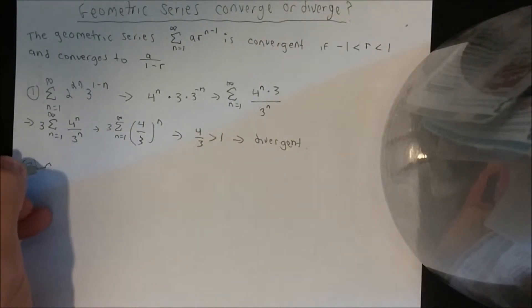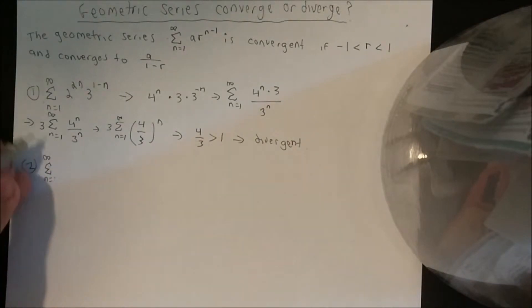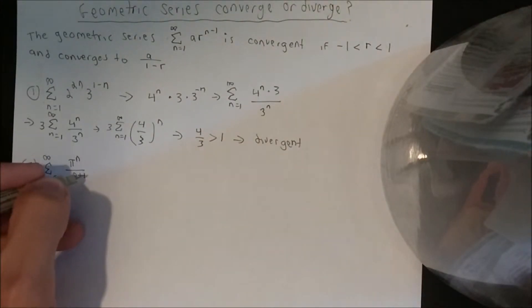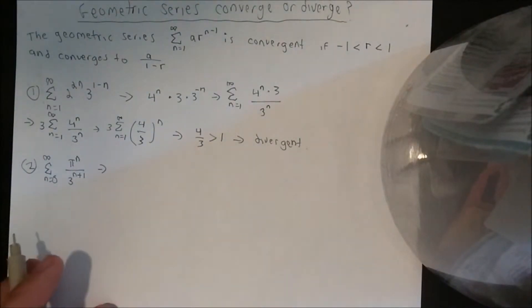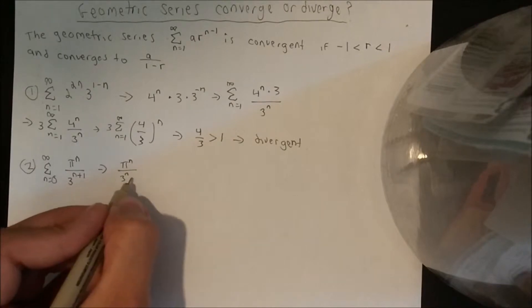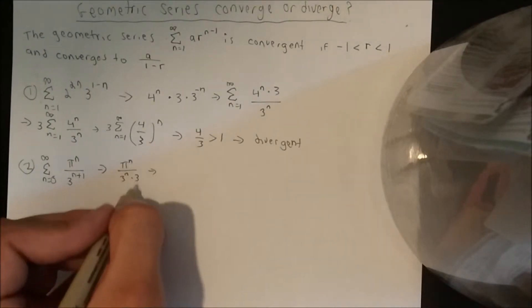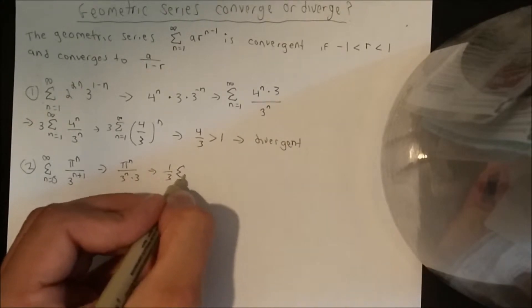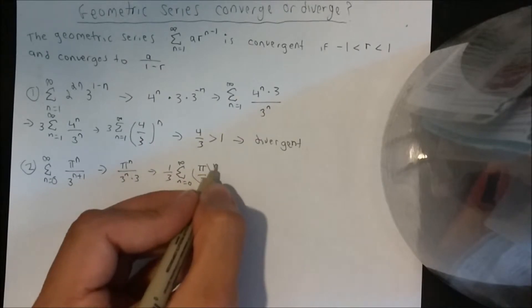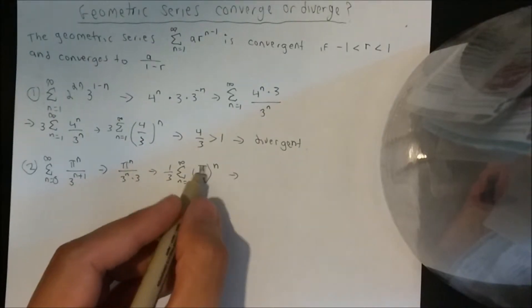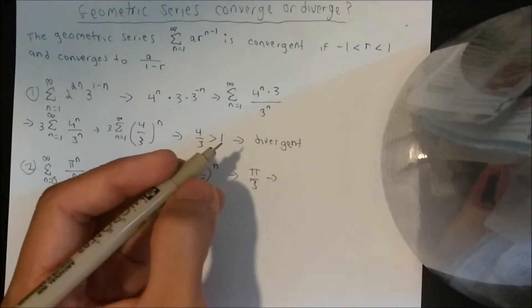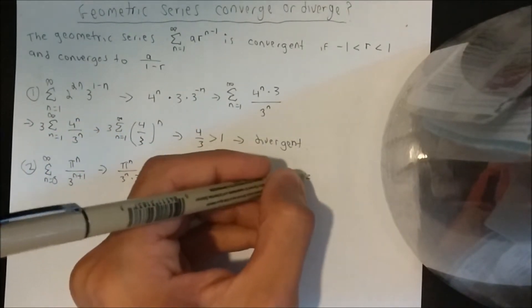Example two: the geometric series π^n over 3^(n+1). Using the same algebra, 3^(n+1) is the same as 3^n times 3, so we bring 1/3 out front and we're left with (π/3) raised to the n. The common ratio here is π/3. Since π/3 is greater than 1, this series is divergent.